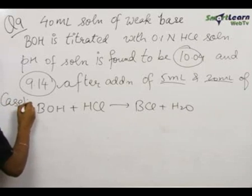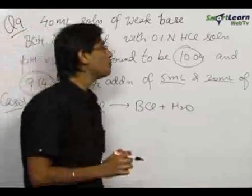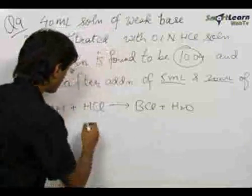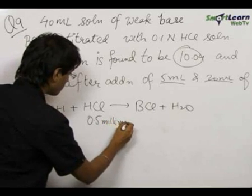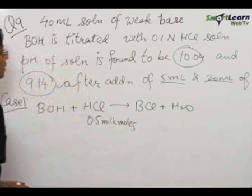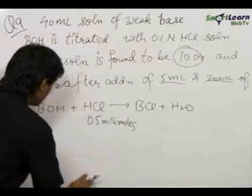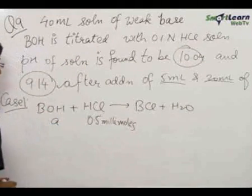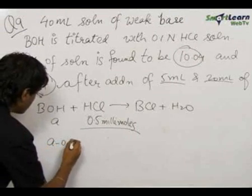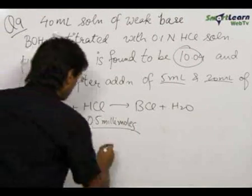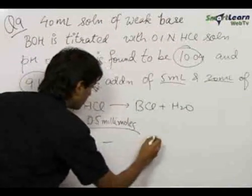Consider the case first when 5 ml of HCl has been added. The number of millimoles of HCl is 0.1 into 5 that is 0.5 millimoles and for BOH, let us consider the initial number of moles to be equal to A. If HCl gets completely reacted we have A minus 0.5, this gets 0 and this becomes 0.5.